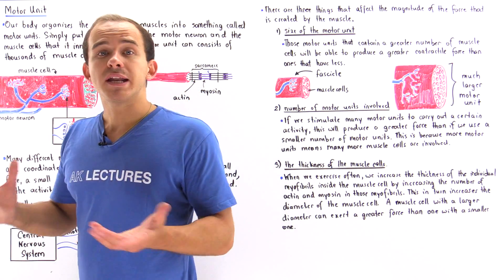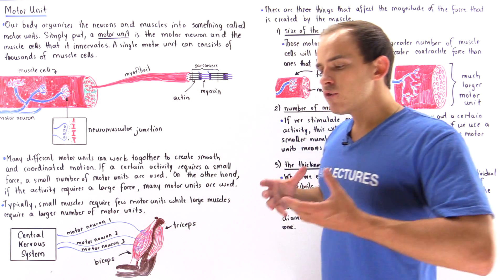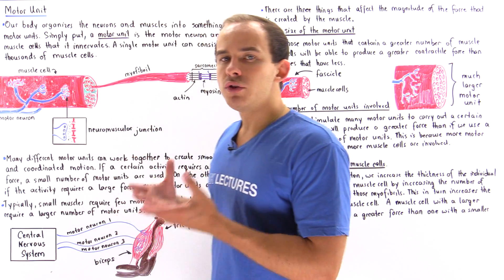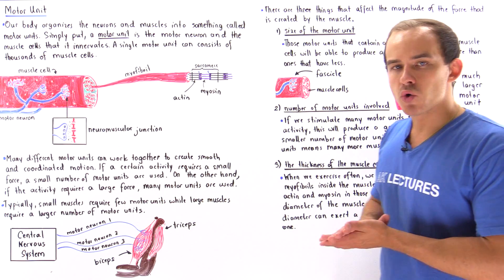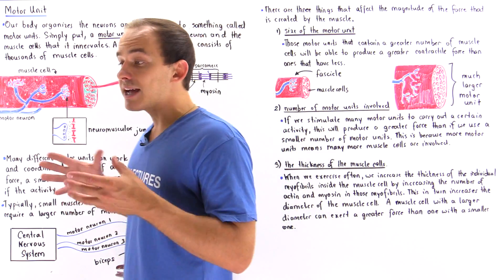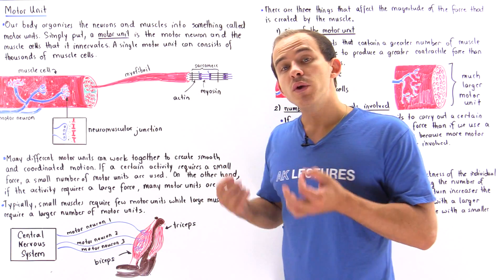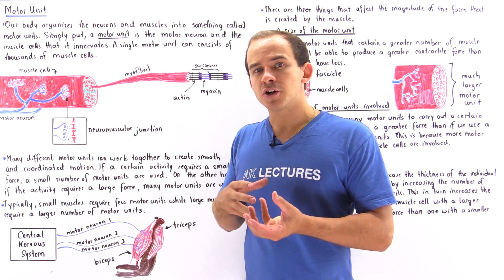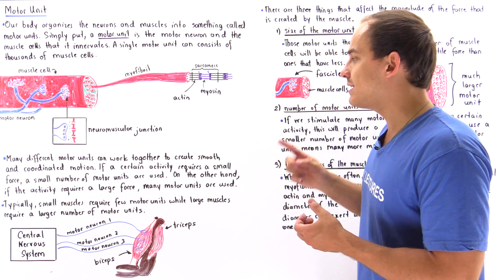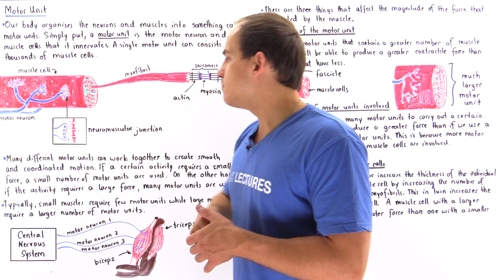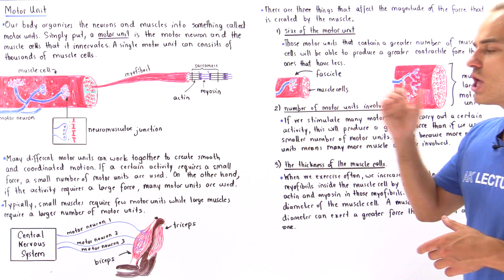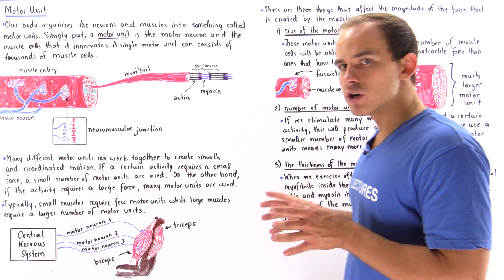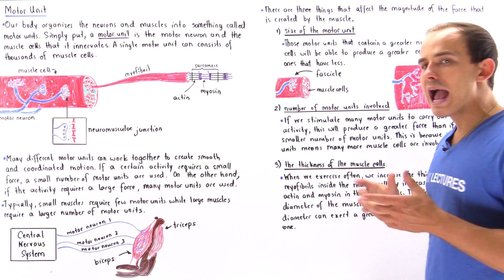In our body, we have many of these motor units. Whenever we're carrying out an activity that requires a very small force, we only use a few of these motor units. But if we're conducting some activity that requires a large force, we have to use many of these motor units. Motor units can work together to carry out a motion in a coordinated and smooth fashion. If a certain activity requires a small force, a small number of motor units are actually used.